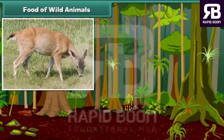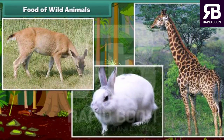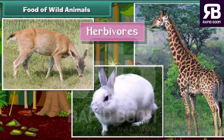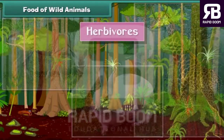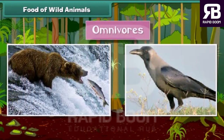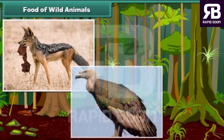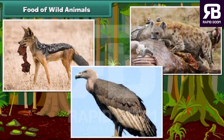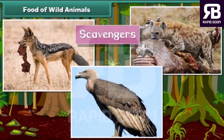Deer, giraffe and rabbits are herbivorous animals as they eat only plants. Animals like bear and crow are called omnivorous animals as they eat both plants and animals. Jackals, vultures and hyena are called scavengers. They eat flesh of dead animals.